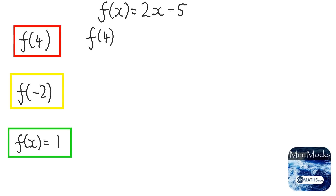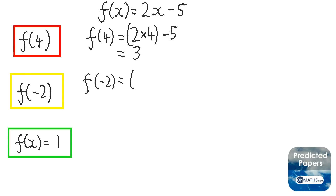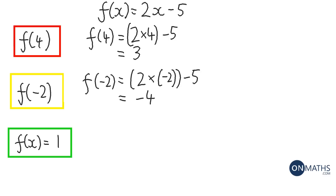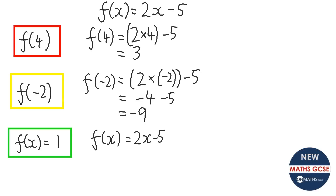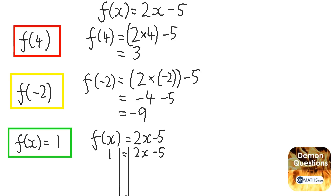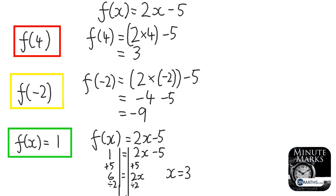For the practice: putting 4 into the function 2x minus 5 gives 2 times 4 is 8, take away 5 is 3. Putting negative 2 in gives 2 times negative 2 minus 5, which is minus 4 minus 5, equals minus 9. For the last one, we replace f of x with 1 and solve: add 5 both sides to get 6 equals 2x, divide by 2, so x equals 3. Check: 2 times 3 is 6, take away 5 is 1.